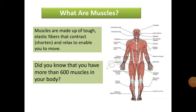We can define muscles as: muscles are made up of tough elastic fibers that contract — shorten, means they become shorter — and relax, means they return to their original position, to enable us to move.